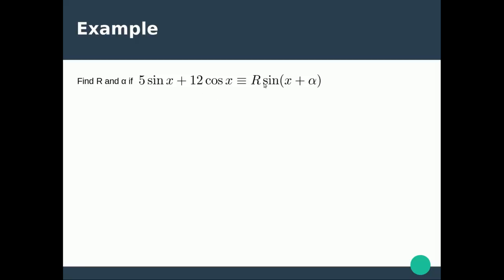So the first thing we do is we're going to expand this using the compound angle formula and we end up with the left hand side being the same. The other side is going to be R times sin x cos alpha plus R sin alpha cos x. That's purely taken from our formula books.